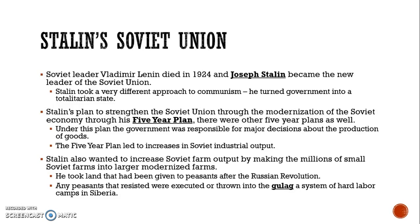Soviet leader Vladimir Lenin died in 1924, and Joseph Stalin became the new leader of the Soviet Union. Stalin took a very different approach to communism than Lenin — instead of allowing the people to have power, which was the basis of communism, he turned the government into a totalitarian state where he had complete power. Stalin's plan to strengthen the Soviet Union through modernization was his Five-Year Plan. The first Five-Year Plan said the government would be responsible for all major decisions about the production of goods, which led to increases in Soviet industrial output. Stalin also wanted to increase Soviet farm output by consolidating millions of small farms into larger, modernized farms, taking back land that had been given to peasants after the Russian Revolution. This made the peasants very angry, and those who resisted were executed or sent to the Gulag — a system of hard labor camps in Siberia.